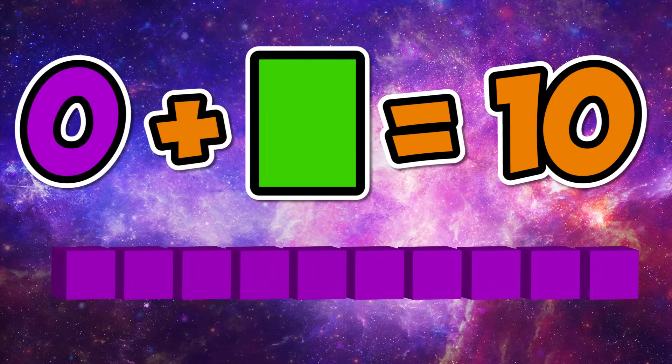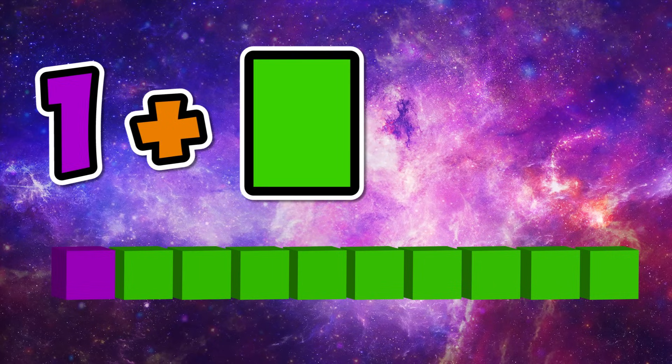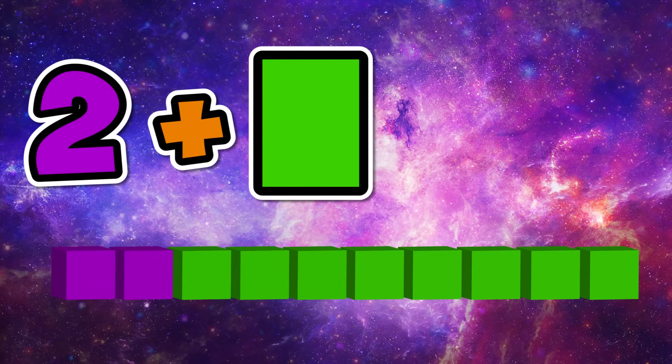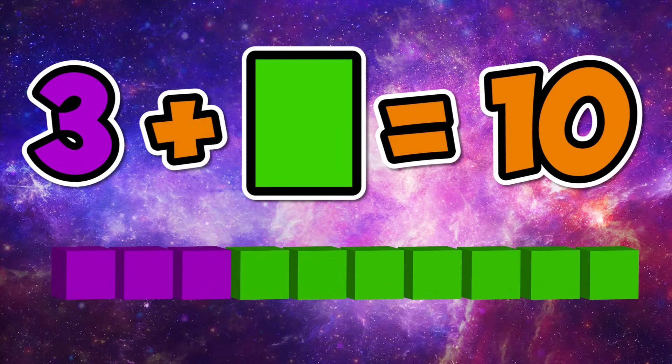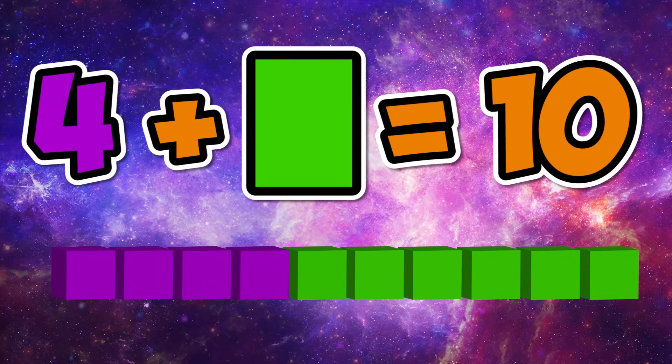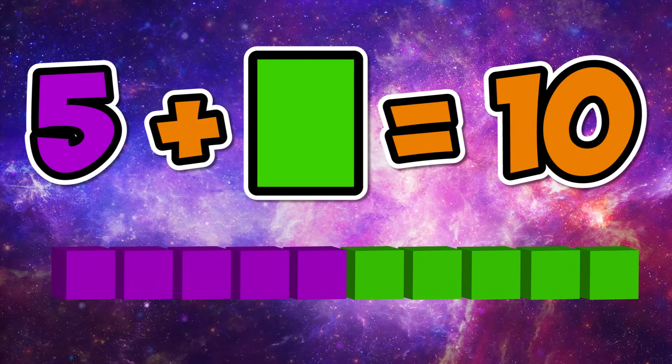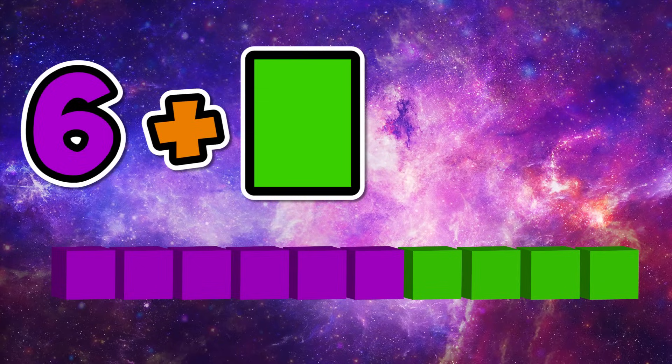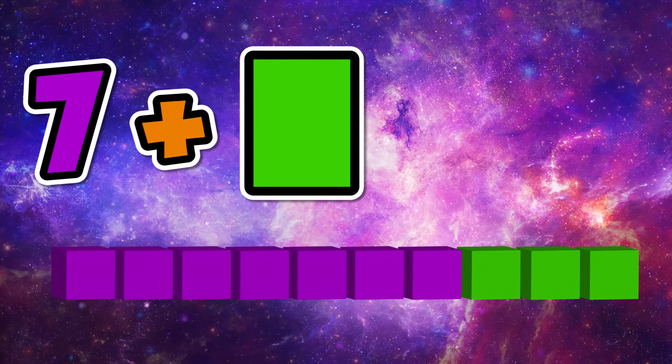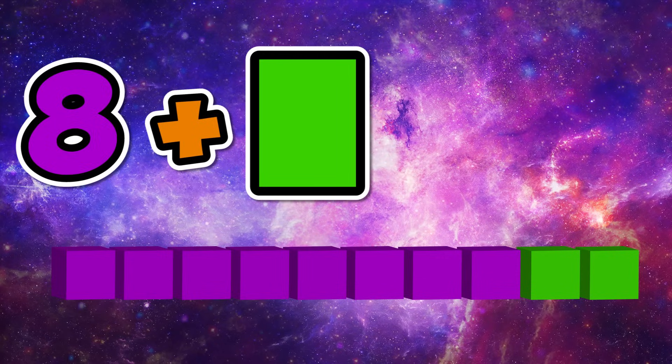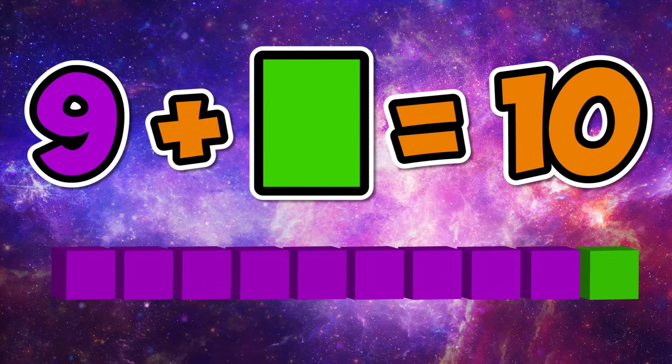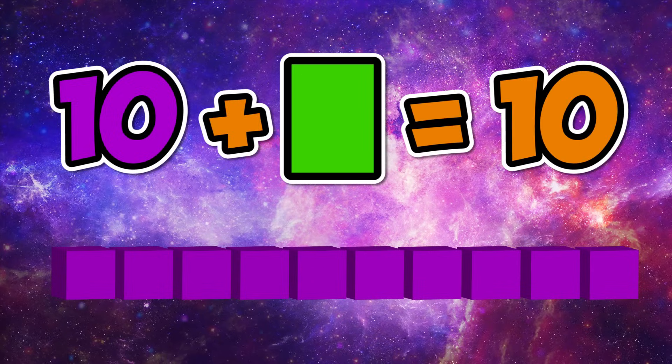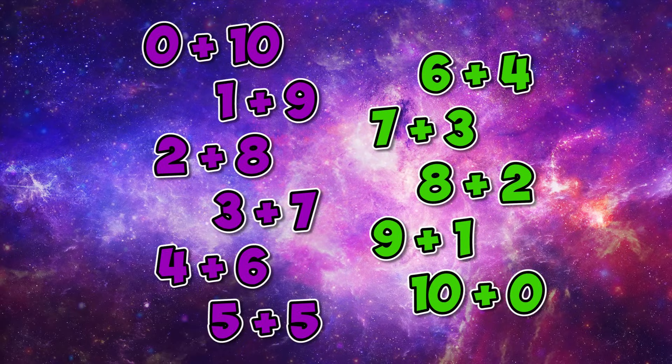Now you answer on your own. Zero plus what makes ten? One plus what makes ten? Two plus... three plus... four plus... five plus... six plus... seven plus... eight plus... nine plus... ten plus what makes ten? These numbers are friends of ten.